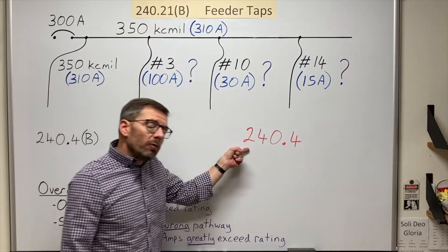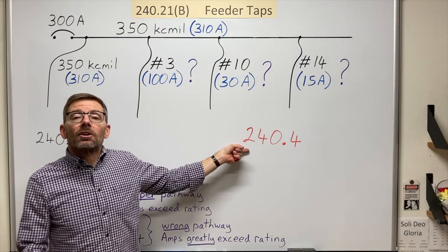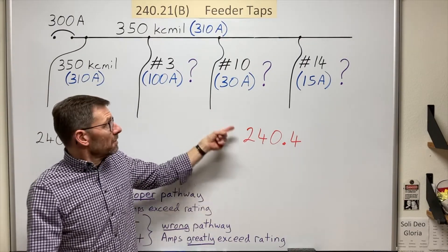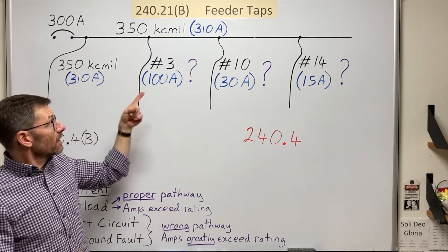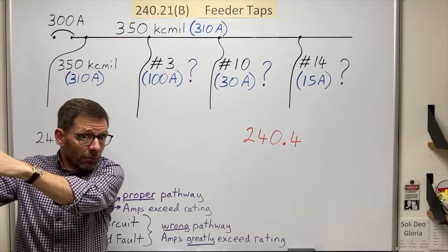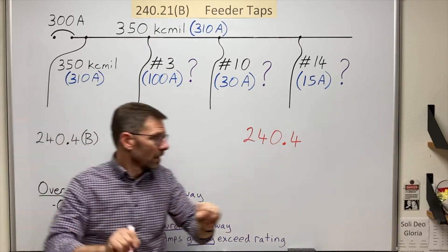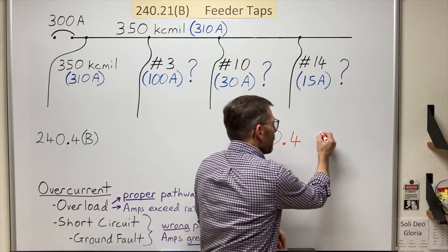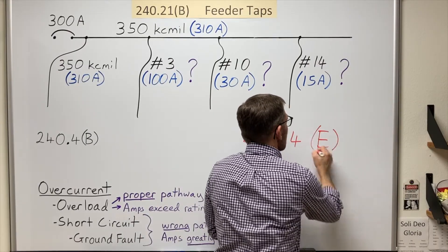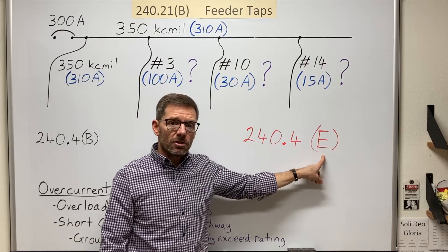We know that 240.4 is about conductor protection. It tells us that these conductors need to be protected according to their ampacities found in Article 310 unless allowed in A through G. And it's there that we bump into E, which is entitled tap conductors.